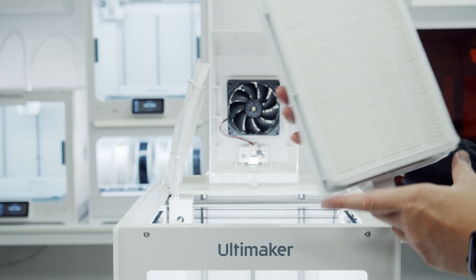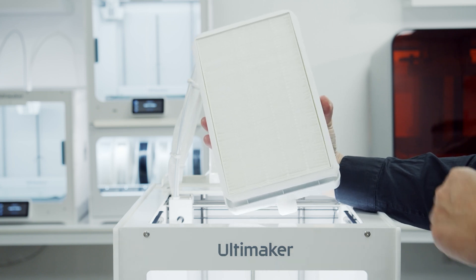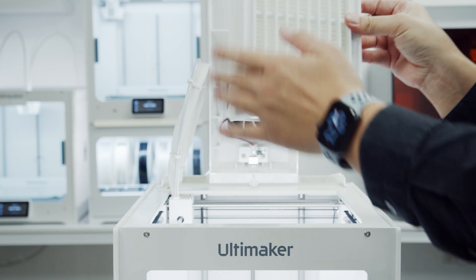Now we can put the filter on. Keep the tab side down and facing the front of the printer, and just place it into the Air Manager.